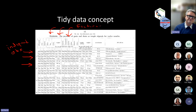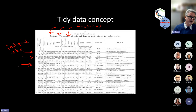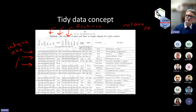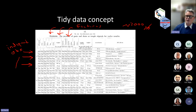He wrote a paper laying out what tidy data means: each row is a collection of independent observations, and each column represents different features. This graphic shows a ledger of pay for farm workers — each row is an independent observation of a different worker, each column is the stipend they received at a particular month. The ledger is a couple thousand years old, which shows Hadley Wickham didn't invent tidy data — he was just the first to clearly articulate it and explain why we should all use it.